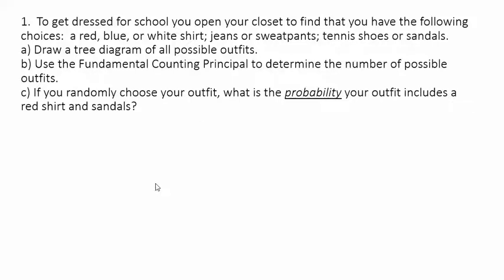To get dressed for school you open your closet to find that you have the following choices: a red, blue, or white shirt; jeans or sweatpants; tennis shoes or sandals. We'll draw a tree diagram of all the possible outfits. A tree diagram is a really cool way to see all possible outcomes, and the fundamental counting principle gives us a shortcut — but it's great to start with an example like this.